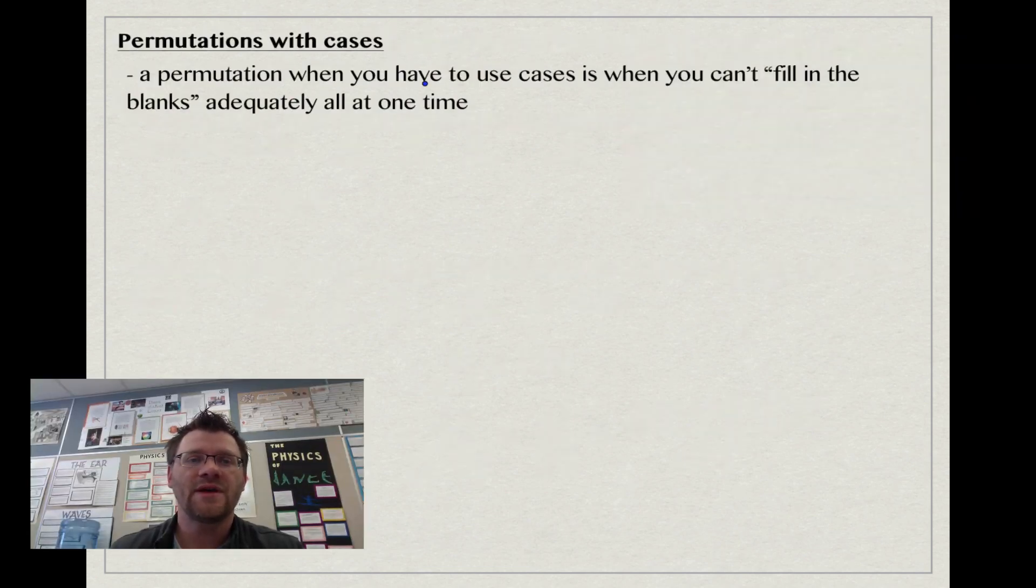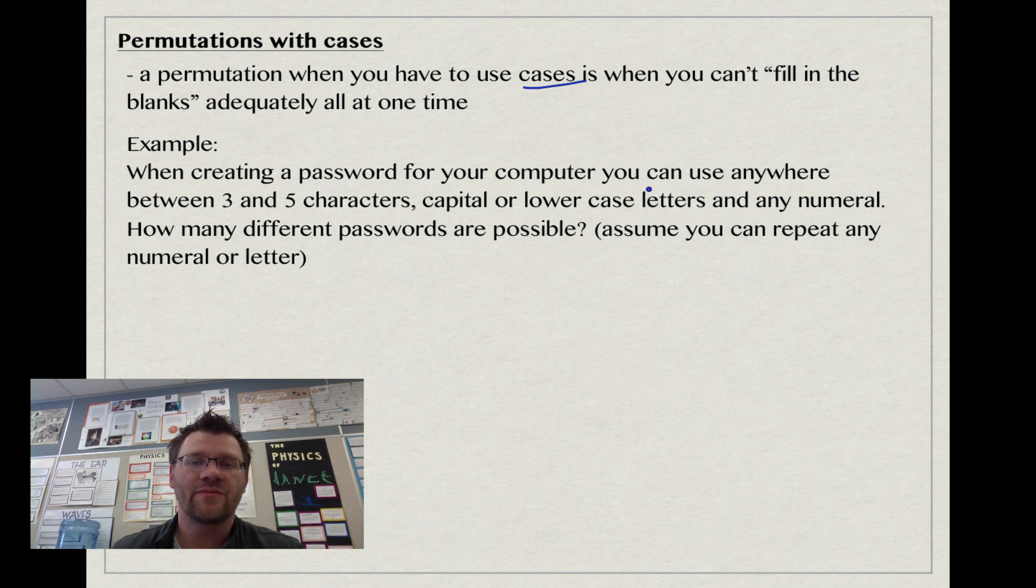Our next type of example is permutations with cases. A permutation when you have to use cases is when you can't fill in all the blanks adequately at one time. For example, when creating a password for your computer, you can use anywhere between 3 and 5 characters: capital or lowercase letters and any numeral. How many different passwords are possible? Assume you can repeat any numeral or letter.